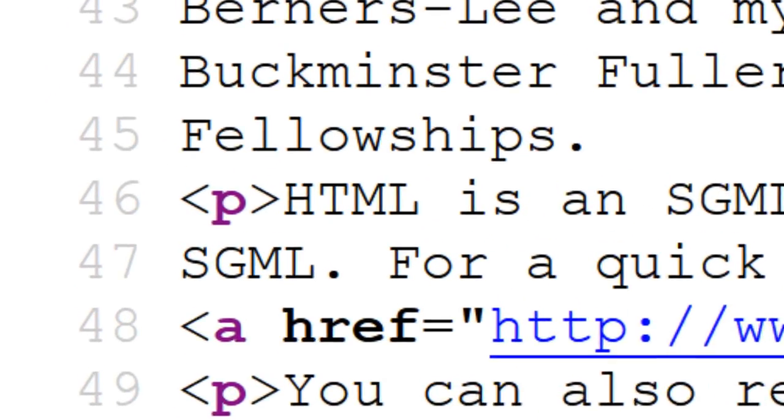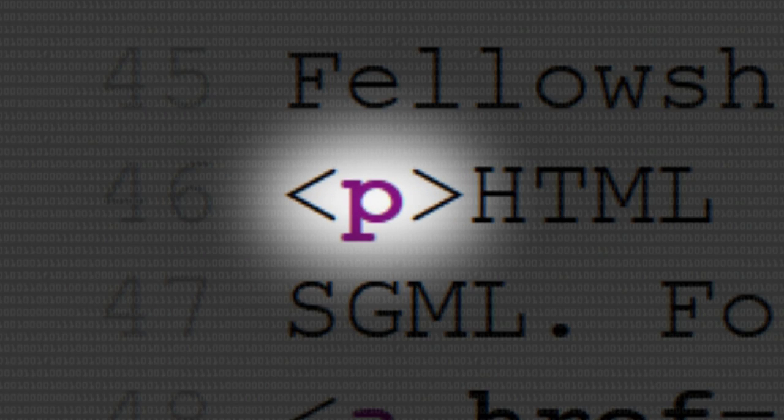Way back in the late 1970s and early 1980s, a team at IBM led by a man called Charles Goldfarb, who was trained as a lawyer, came up with the idea that it would be really useful to be able to put tags into documents to say what the component parts of the document were — like P for paragraph, which is now so familiar to us from HTML as pointy-bracket P close pointy-bracket. They came up with this whole notation for tags.